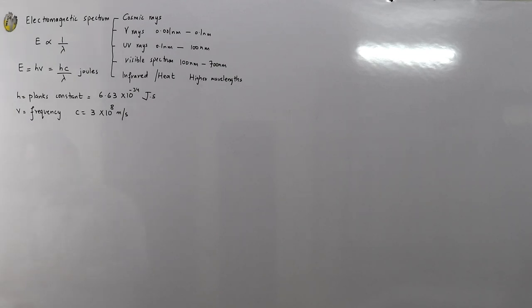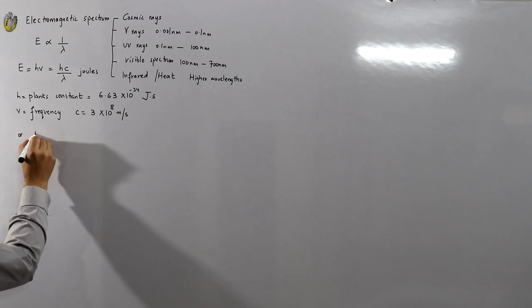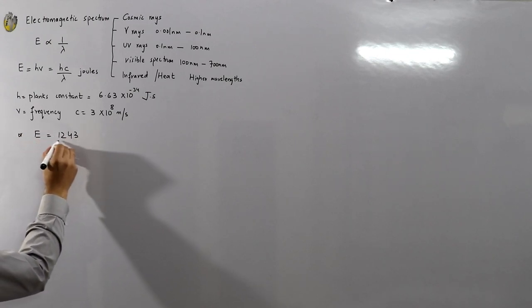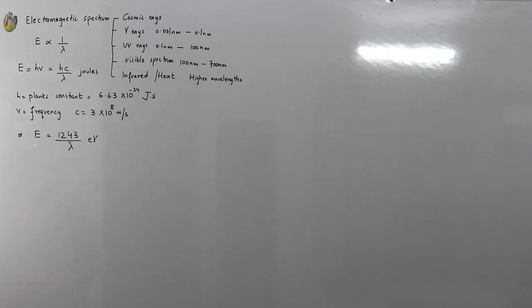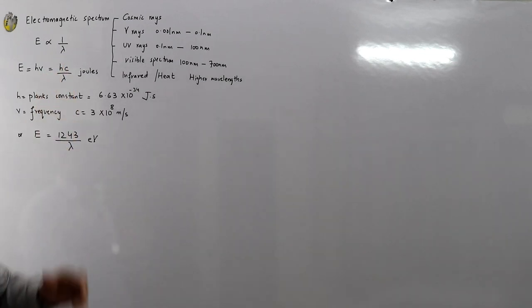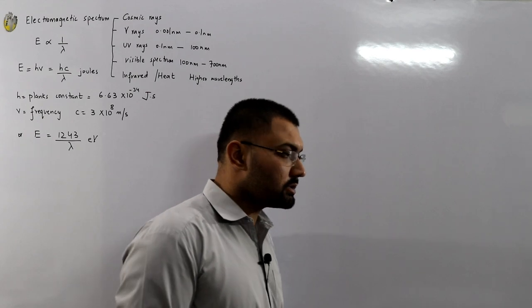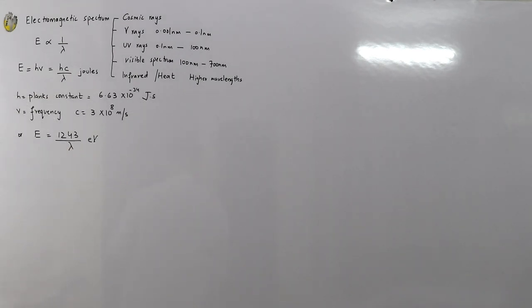You can also use another formula for the energy of the photon: E = 1243/λ, which gives the energy directly in electron volts. Since h and c are constants, and the conversion factor of 1.6 × 10⁻¹⁹ is incorporated along with the nanometer prefix, the result comes out directly in electron volts.